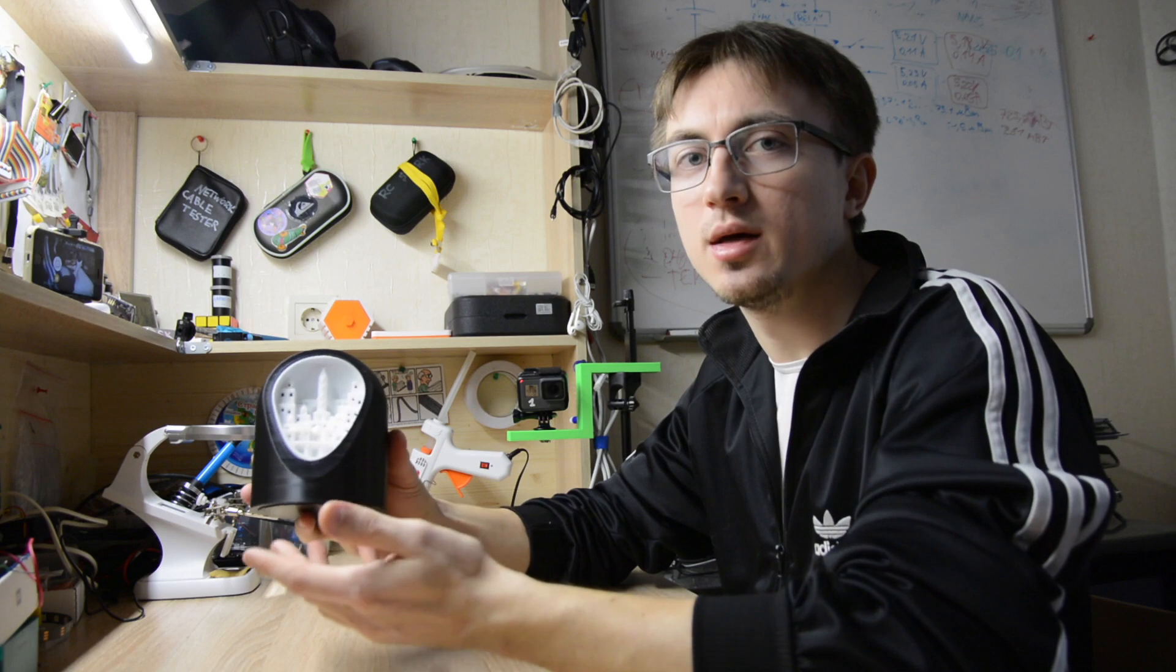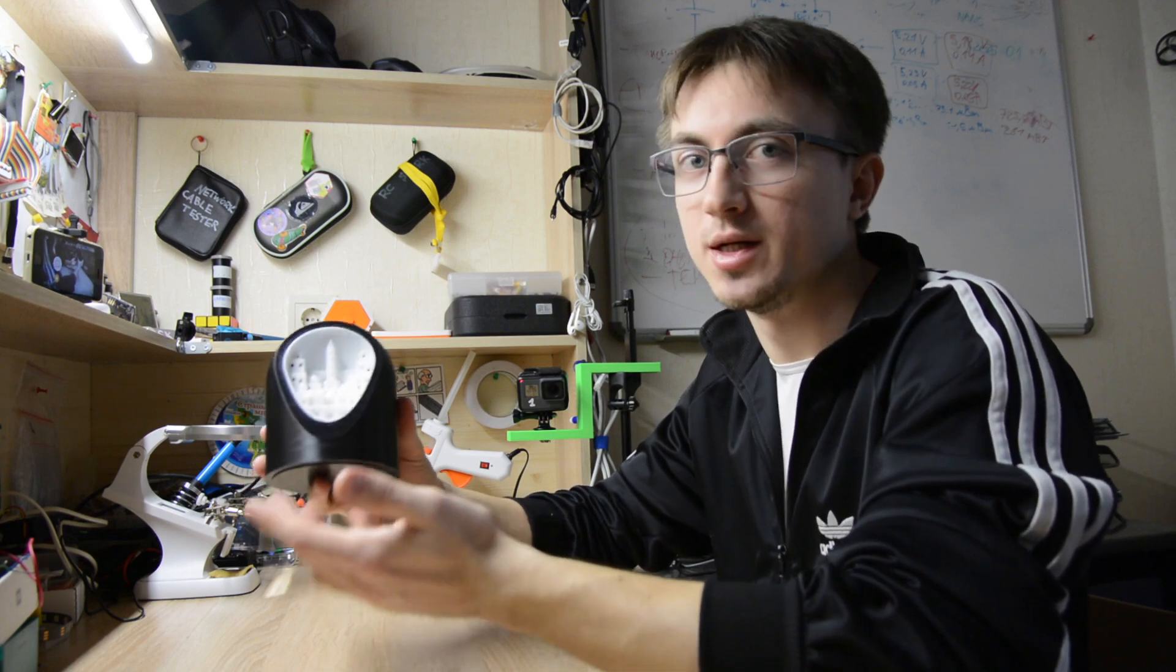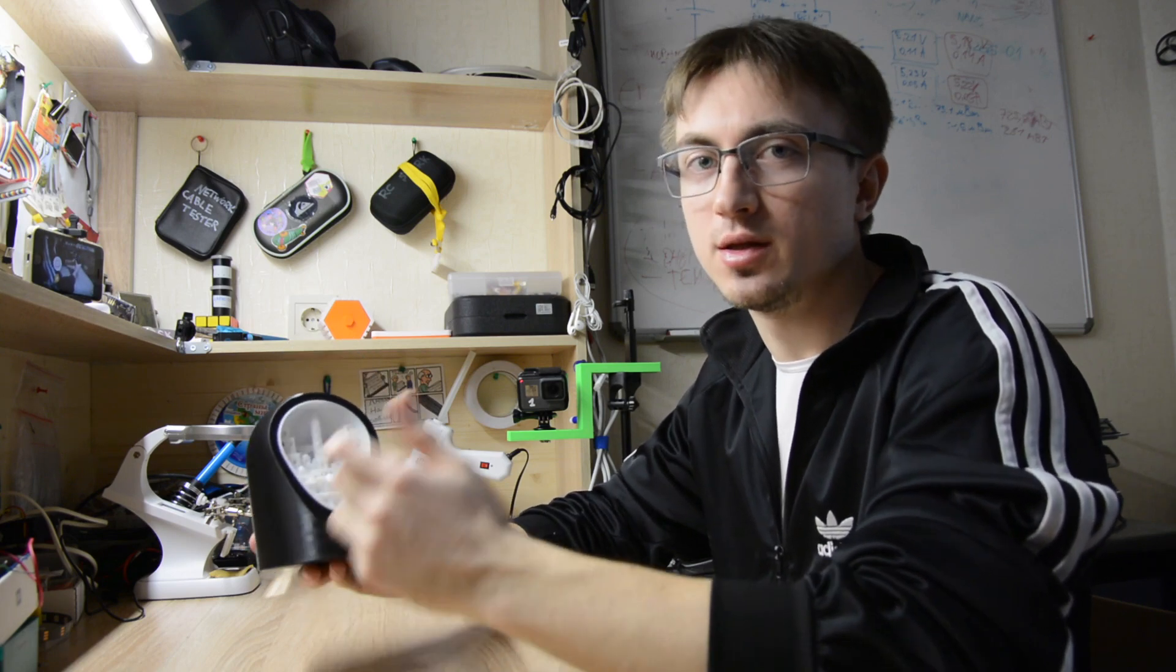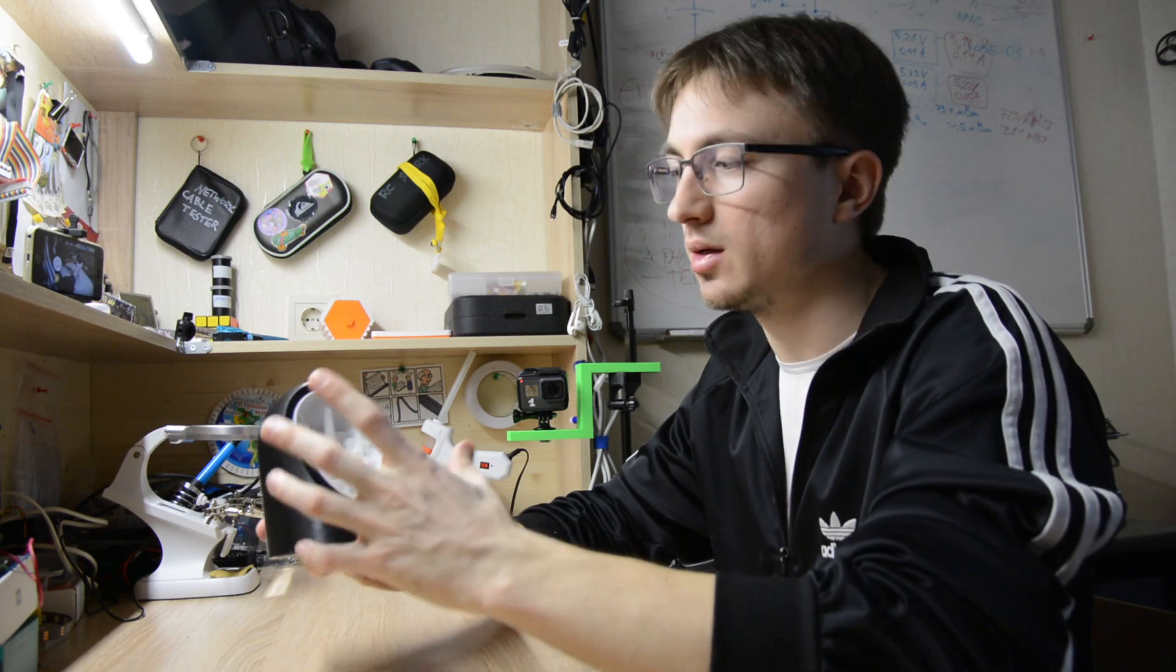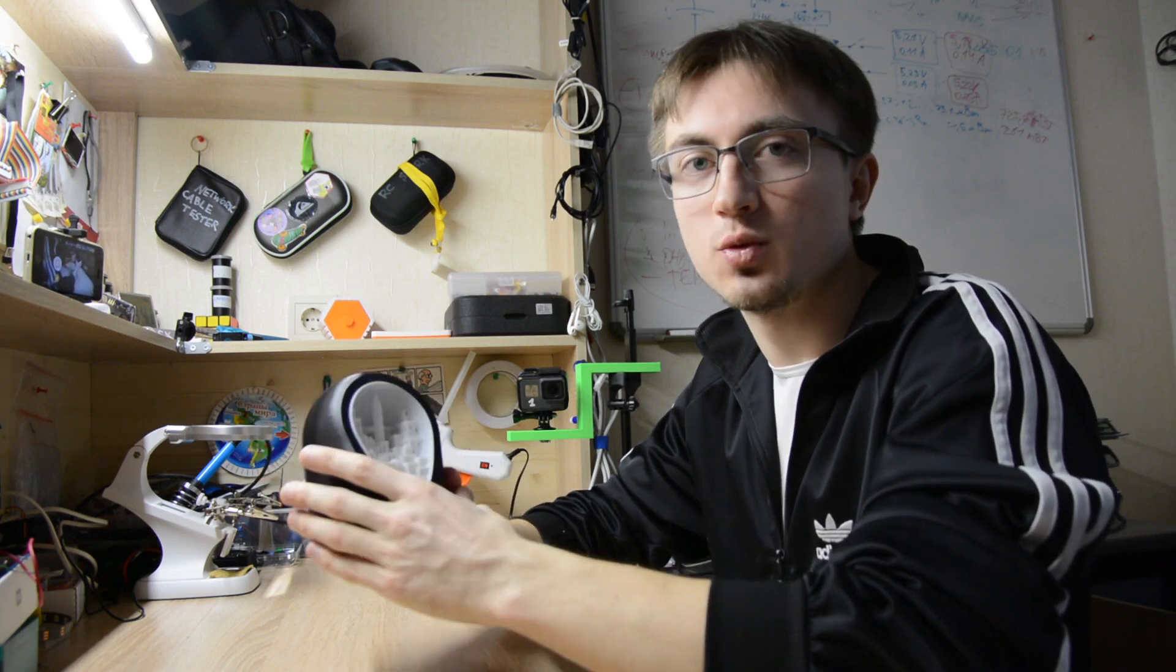I 3D printed it with my Ender 3 3D printer, and now I need to fix this white part inside the black body. So let's start with hot glue.